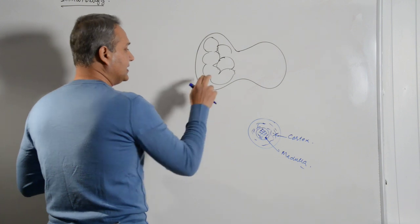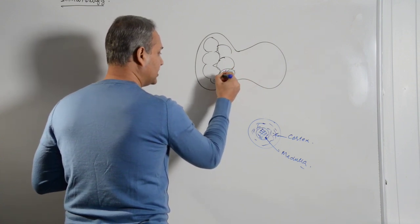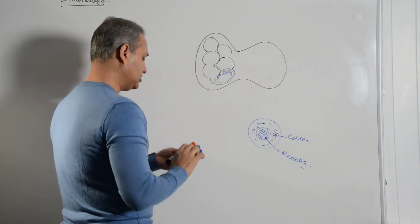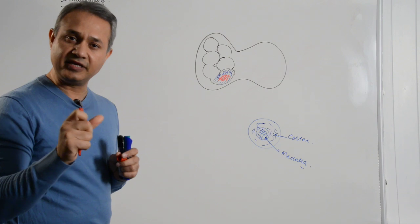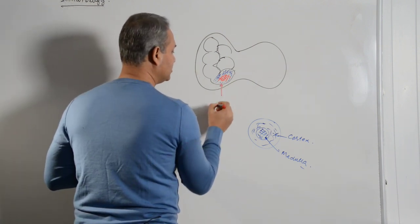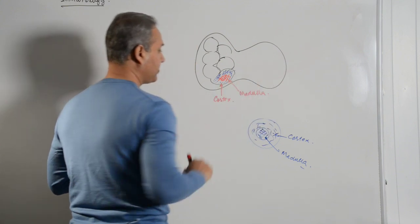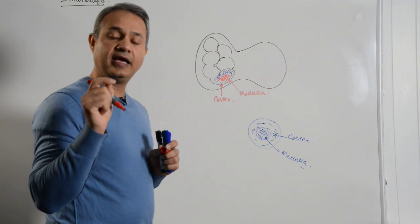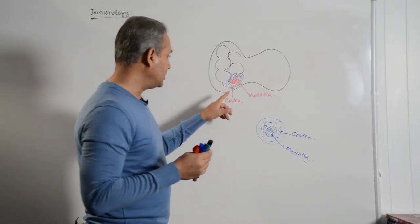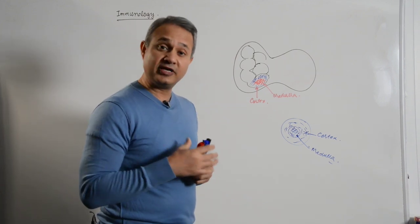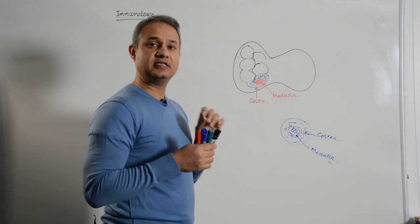That is also true here — these thymic lobules show a different histological structure on the outer side than on the inner side. So every lobule is divided into cortex, the outer area, and medulla, the central area. From a USMLE point of view, many questions will ask where you find double positive cells, single positive cells, or double negative cells — whether they are in the cortex or medulla. So knowing the location of a cell within the thymic lobule is important.